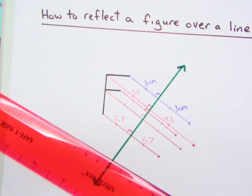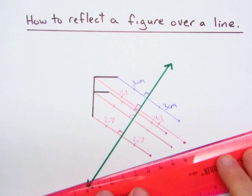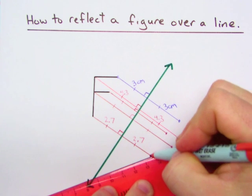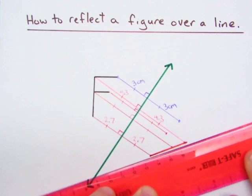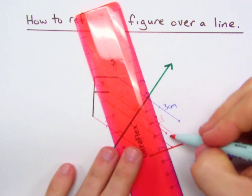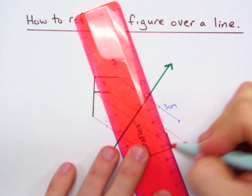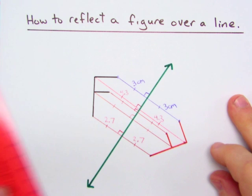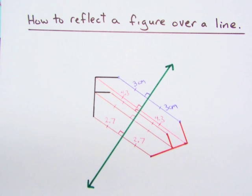So another perpendicular line there. And then finally, it's just to connect all of our points. And there you'll see the F is reflected.